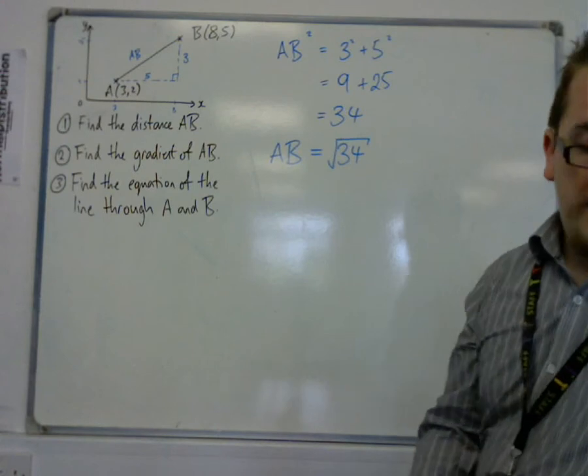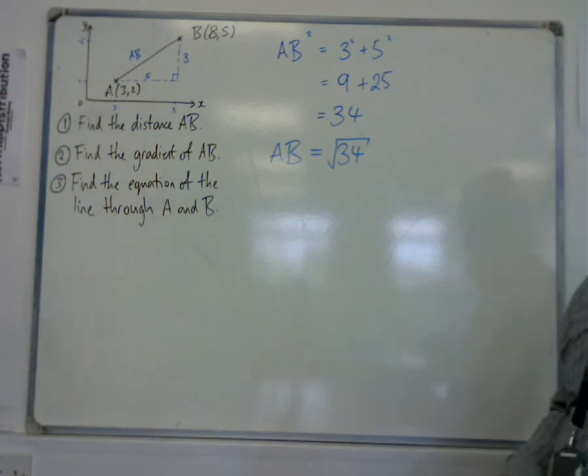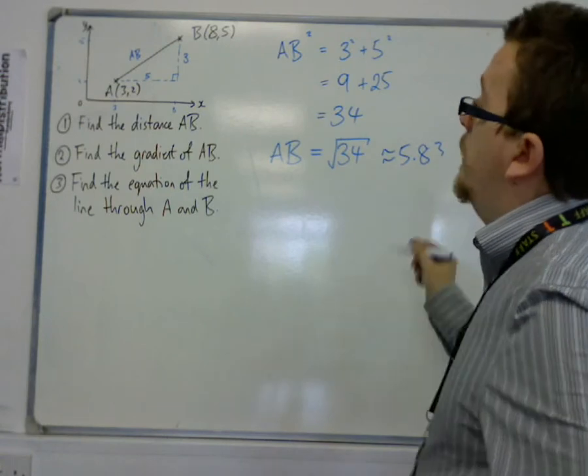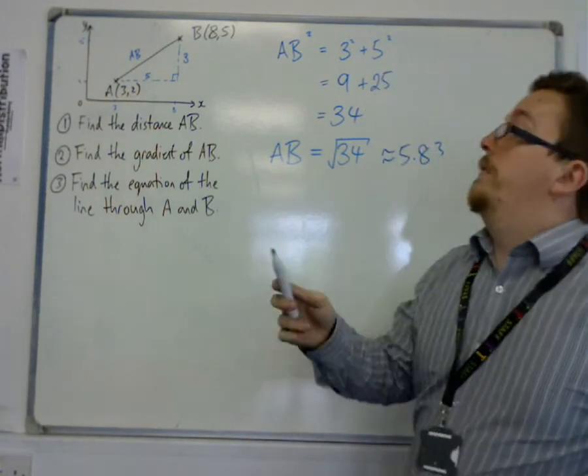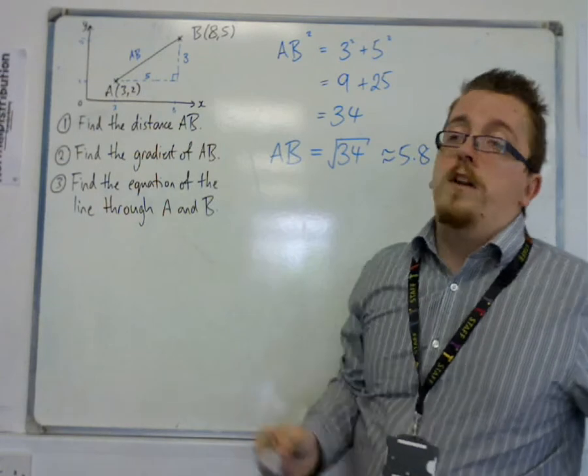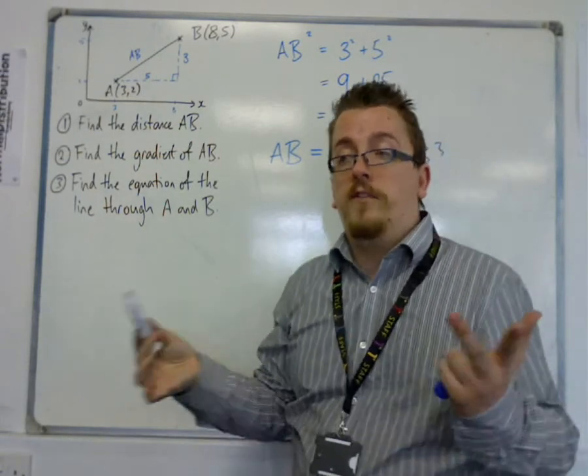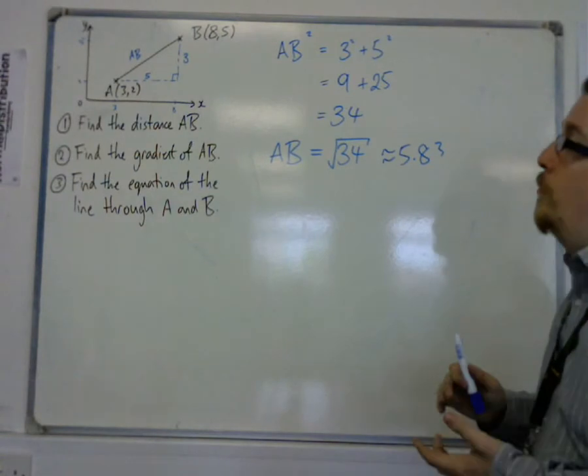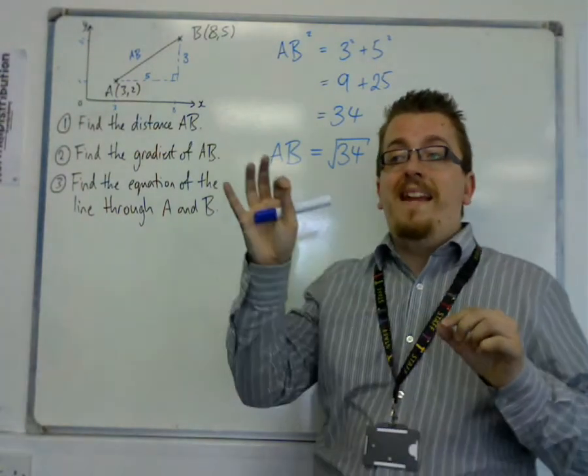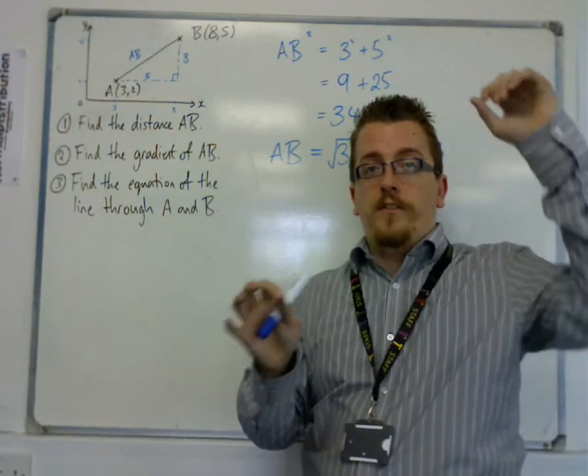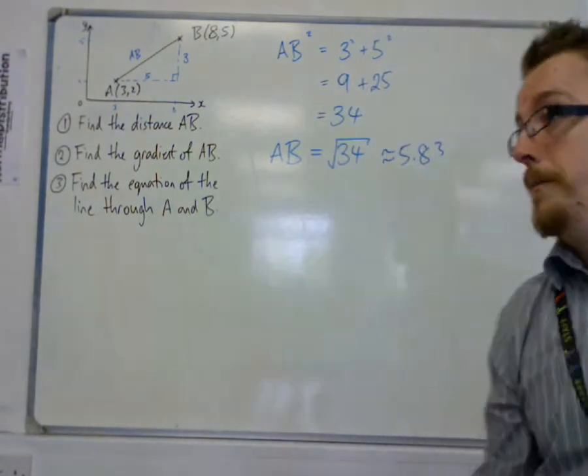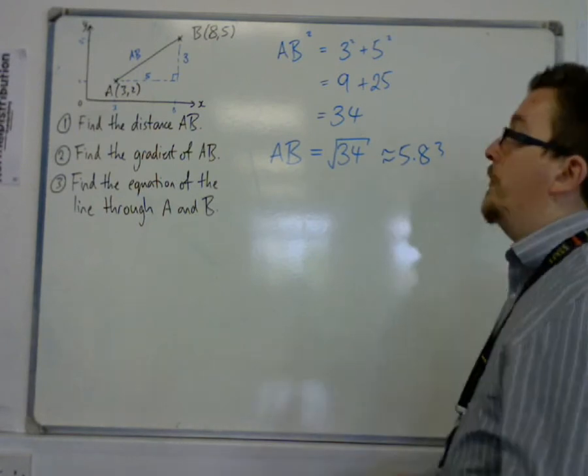So AB is equal to root 34, which is about 5.83. And you should really check that just to make sure that it is a side that is longer than 5 and 3, because it has to be, because it's the hypotenuse of the triangle. So that is how you can work out the distance between any two points on the Cartesian grid, on the coordinate grid, using that method. Draw a triangle, use Pythagoras' theorem.